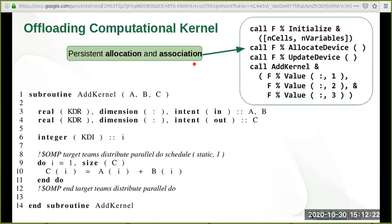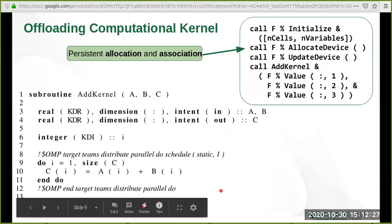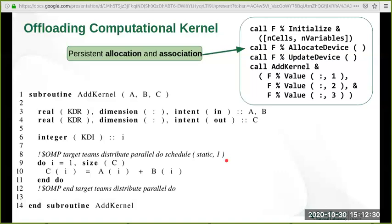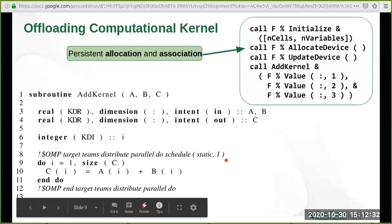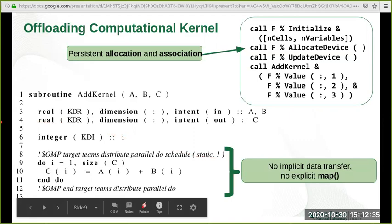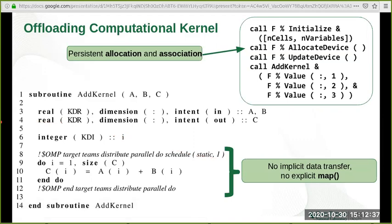Inside the subroutine add_kernel, we add the directive OMP target teams distribute parallel do to offload this computational kernel on the GPU. Note that in this offload, there is no implicit data transfer and there is no explicit map clauses because all the association and allocation is already done previously prior to the call to this kernel. So again, it is important to note that the only changes to the kernel code is just this directive to offload this computational kernel to the GPU.